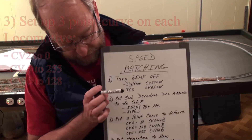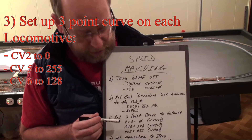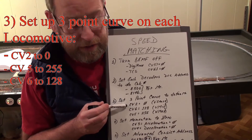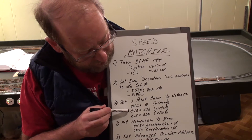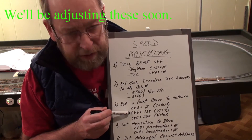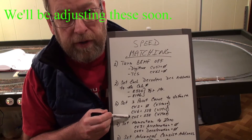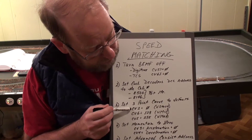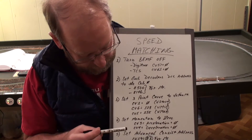Next, I want to set the default three-point speed curve so that CV2 is at zero, which is the start; CV6, which is the mid-range, is 128; and CV5 is 255, which is the maximum. Set each of those CVs for each locomotive to get Vstart, Vmid, and Vmax.